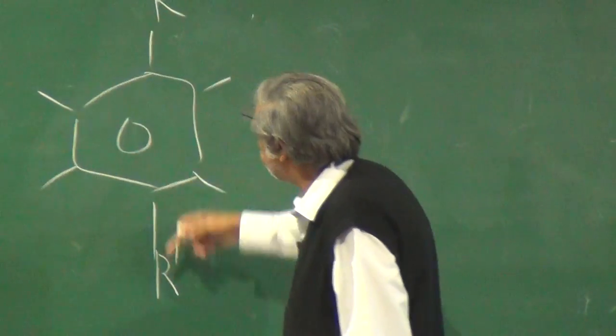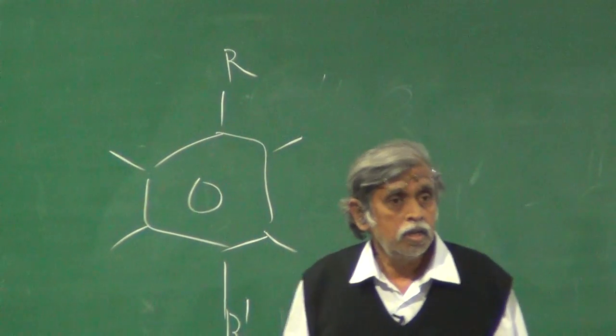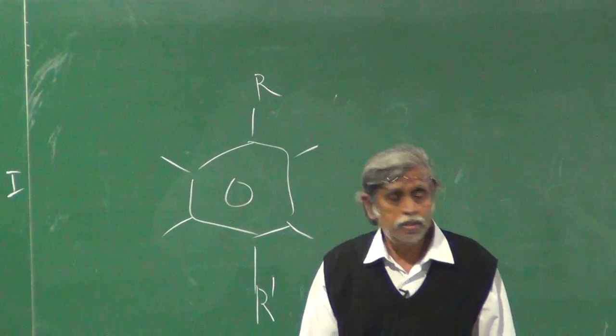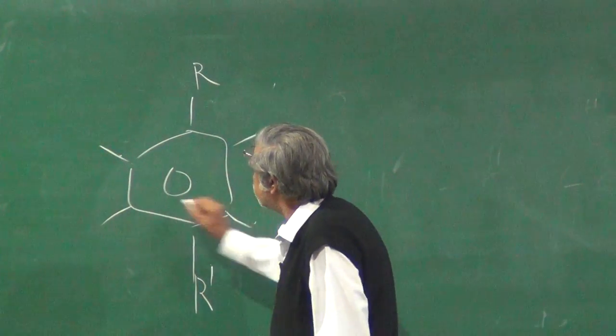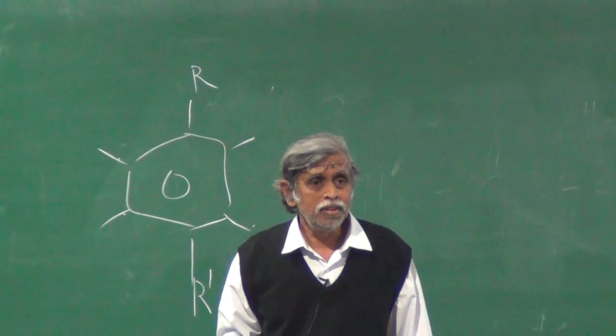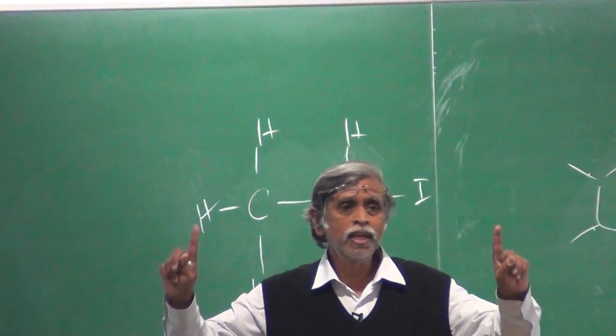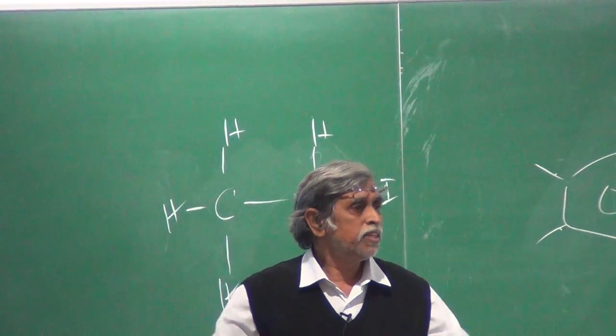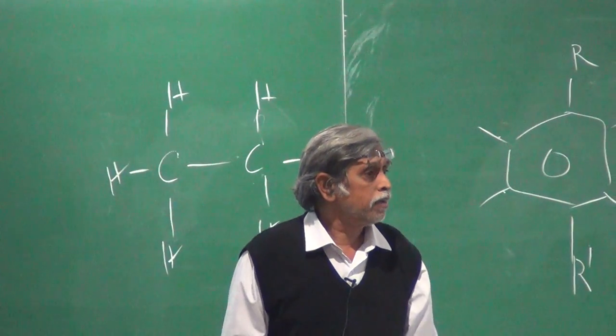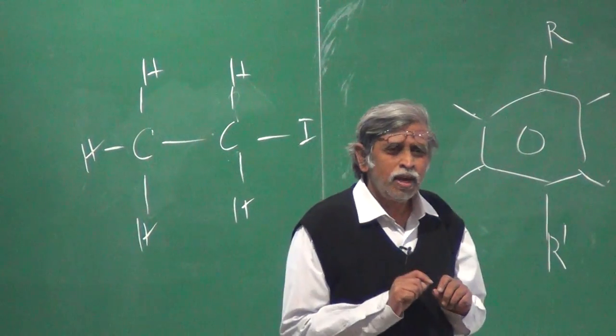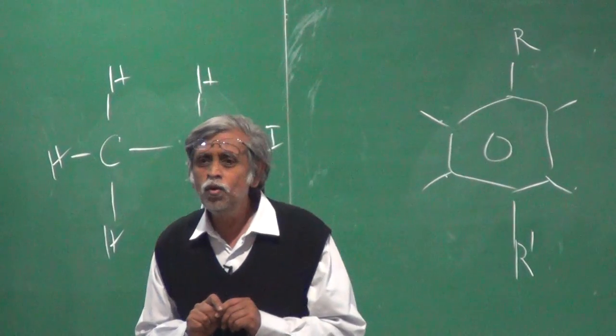So we have 2 groups here. Non-equivalent. Then this and this and this and this actually become non-equivalent. And therefore they will split. And the sort of pattern that you see there now is like it's almost like a doublet of a doublet.